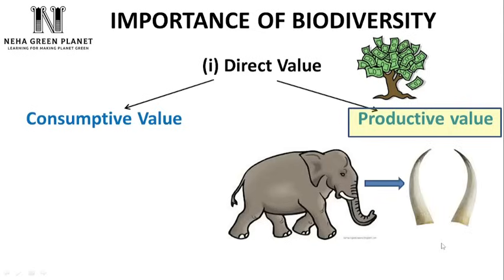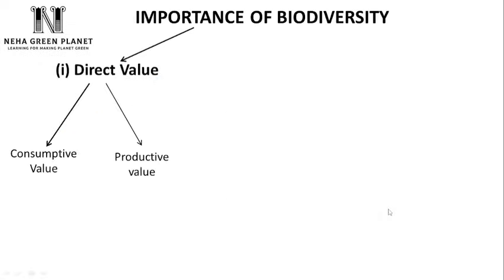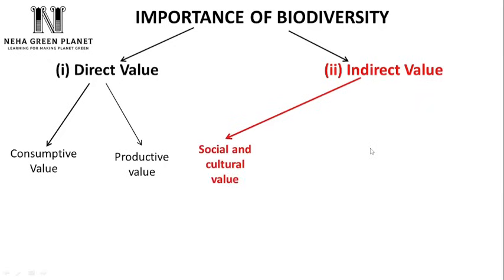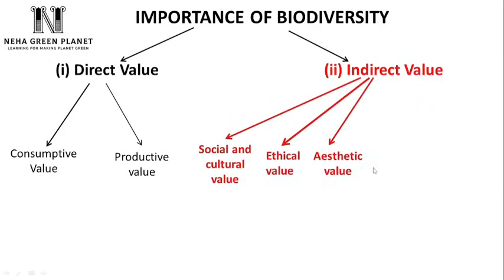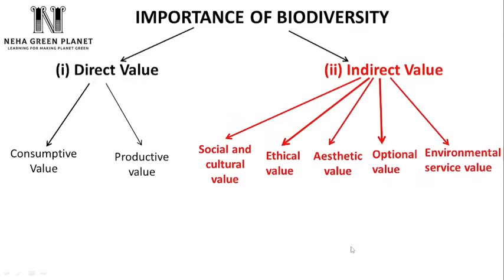Elephants are hunted down for their tusks, which are valuable in the market because many statues are made from them. Unfortunately, productive use value is sometimes responsible for the decline of species numbers — in this case, elephants have been pushed to the endangered category because of hunting for their tusks. After direct value, let's learn about indirect value — those benefits from plants and animals that are difficult to associate with any monetary terms. They are of the following types: social and cultural value, ethical value, aesthetic value, optional value, and environmental service value.